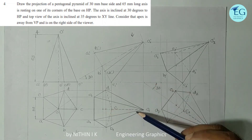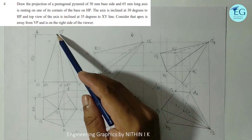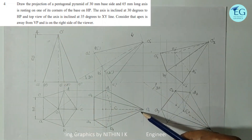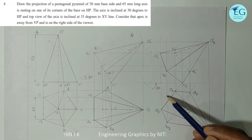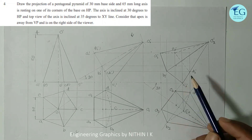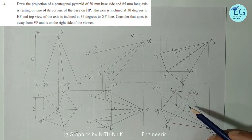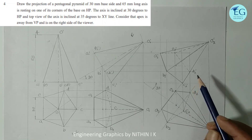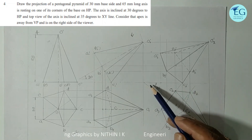The axis will change and then the axis length is reduced. The axis is 65mm, but the apparent length is less than 65mm. The apparent angle is defined. This is the top view of the reference line, and the point is located on the 35 degree line.